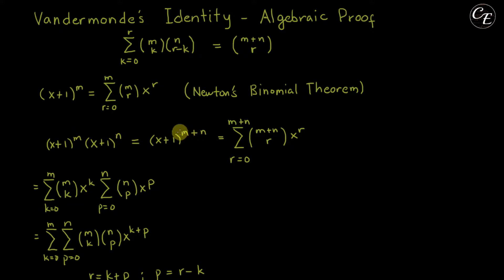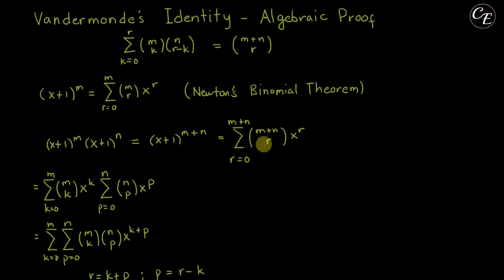Now we can apply the binomial theorem here. Comparing the two expressions, the exponent here is m plus n but in the theorem it is m only. So in the summation, instead of m, we are going to use m plus n.